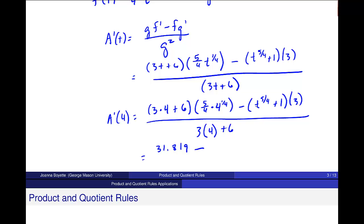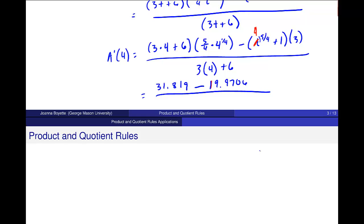I forgot to put a 4 here. This should be a 4. I'm going to plug in a 4 there. 18 times 5/4 times 4 to the 1/4 power, I get 31.819 for this first piece. Without rounding, I'm going to subtract minus 4 to the power of 5/4 plus 1 all times 3. This is minus 19.9706.